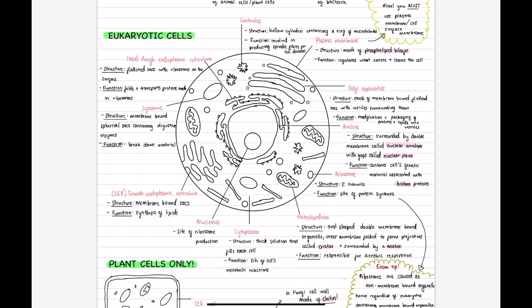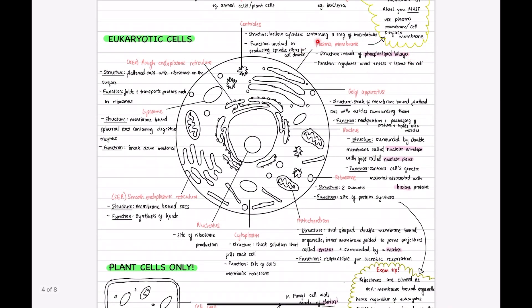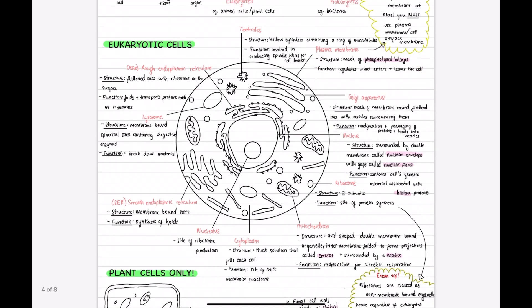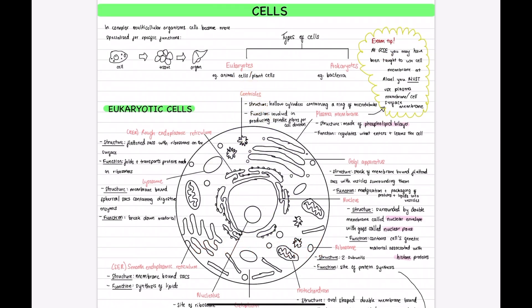Finally, we have the plasma membrane which is made up of a phospholipid bilayer which regulates what enters and leaves the cell. It is important to note that in your GCSEs you would have been taught to use the term cell membrane. However, in A level you must use the term plasma membrane or cell surface membrane in order to gain the marks in your exam.